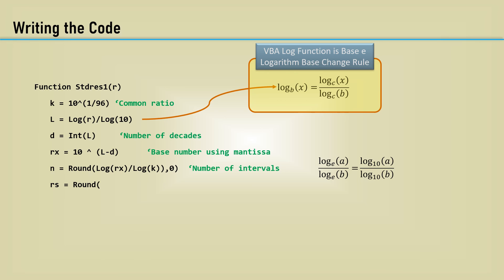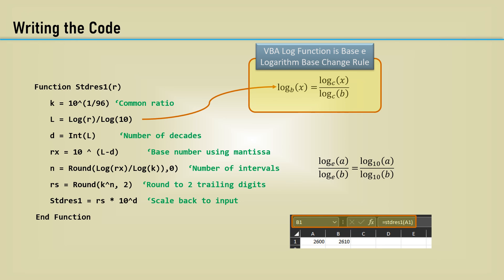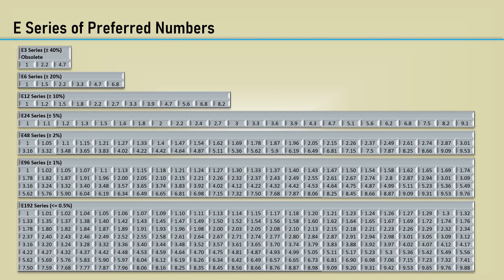Then RS is K to the N power, rounded to two trailing digits. We will then scale the number back up or down to the number of decades the input had and set the function name equal to that. Just drop the code in the developer window and use the function like this. An input of 2600 in cell A1 gives us the standard value of 2610. On the next video, we will add features to this code to make it work for all the E-Series preferred numbers.